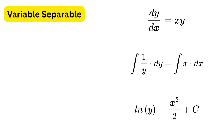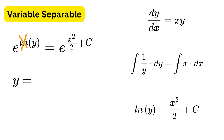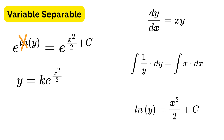Finally, solve for y by taking the exponential on both sides to remove the log. This gives y equals e raised to (x squared over 2 plus c), which you can rewrite as some constant k times e raised to (x squared over 2). The important steps to keep in mind are: separate, integrate, and then simplify.